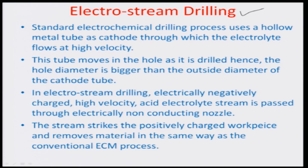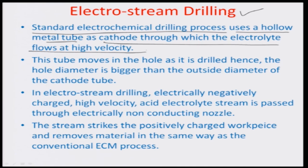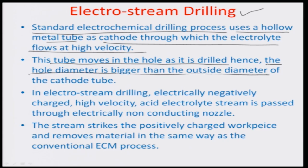The standard electrochemical drilling process used a hollow metal tube as cathode through which the electrolyte was flowed at a very high velocity. This tube moved into the hole as the drilling was being performed, and the hole diameter that came out was kind of bigger than the outside diameter because of the overcut issues associated with the cathode tube - that is, dissolution of material along the drilling face and also along the drilling sides of such a tool, which would typically result in the oversize of the hole diameter.